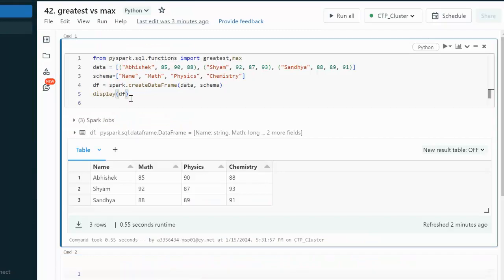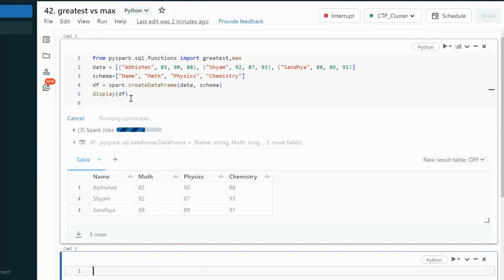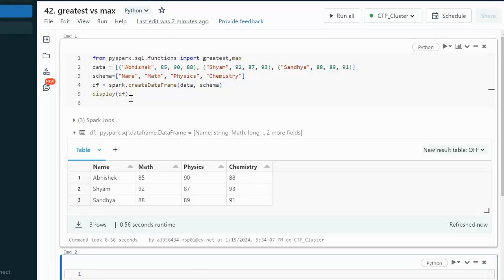Here let me try to create this data frame. It is having the same data set as we have seen in the slide. First is the name column, then Math, Physics and Chemistry.